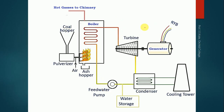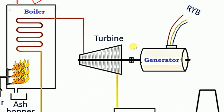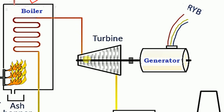Now let's see how mechanical and electrical energy are generated. In the boiler, water is taken in and steam comes out. That steam goes inside the turbine, where it impacts the blades connected to a common shaft. The steam hits the blades, causing them to rotate, which rotates the shaft, producing mechanical energy at the turbine's output. This mechanical energy is connected to the generator, which takes mechanical energy as input and produces electrical energy as output.